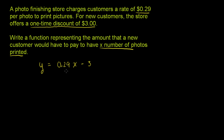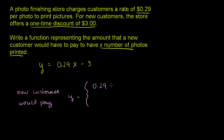So what we could do to make this fancier: y is equal to 0.29x minus 3 if x is greater than 10 — if the customer orders more than 10 photos. It's 0 otherwise. If it's 10 or fewer photos, the result becomes negative, and the store isn't going to pay them. So they either pay nothing, or if they get more than 10 photos, they pay based on this function.